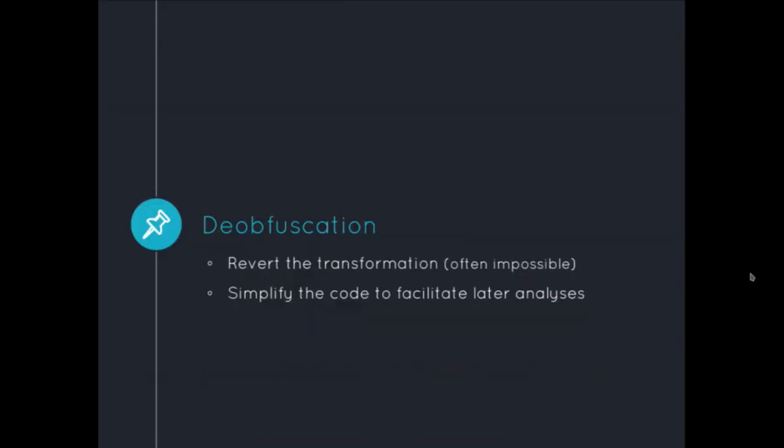Deobfuscation ideally would be the full reverting of the obfuscating transformations. But often it's impossible to do the reverse operations because we lose information in the obfuscation pass. So we consider deobfuscation as simplifying the code in order to facilitate further analysis.